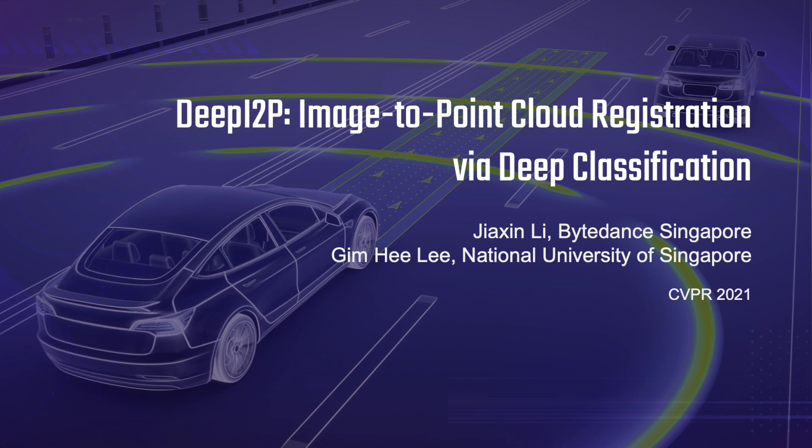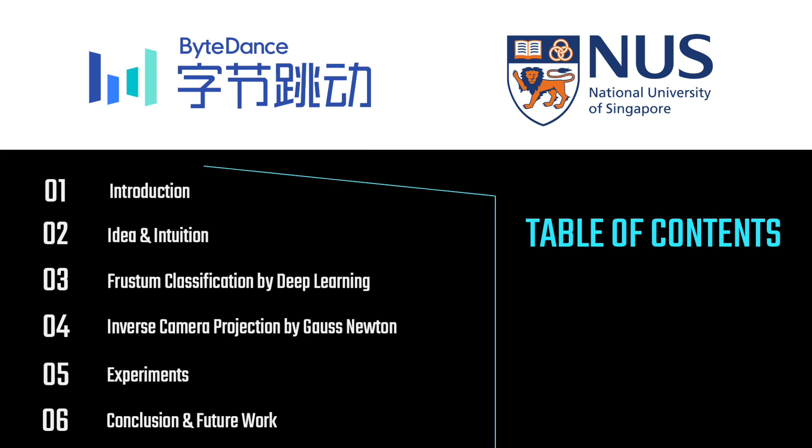Here we are presenting our CVPR 2021 paper Deep I2P: Image to Point Cloud Registration via Deep Classification. Our presentation consists of six parts. The third part, Frustum classification, and the fourth part, inverse camera projection, are the major components of our approach.